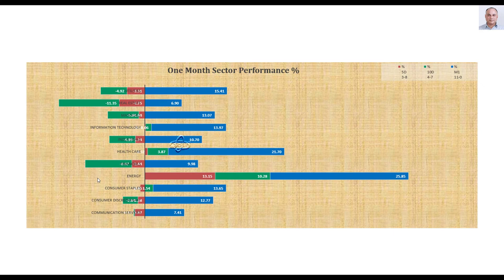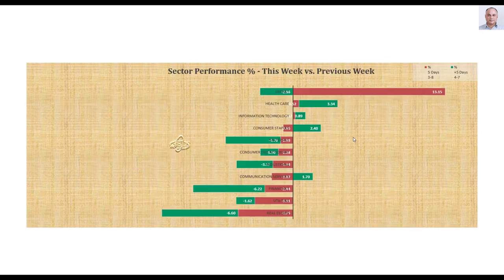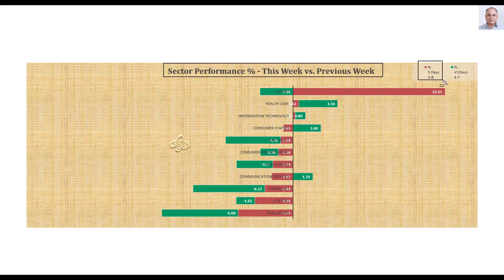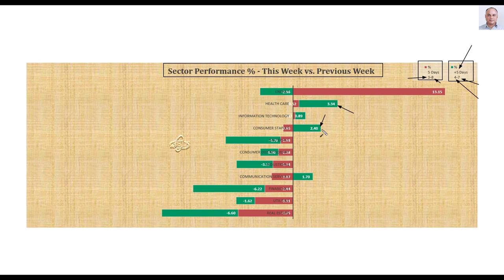Let me come back to sector performance. Now let's compare this week's performance with the previous week. The red bars represent last 5 days — this week's performance — and the green bars represent previous 5 days. Last week, 4 sectors were up and 7 were down. This week it deteriorated a bit: 3 are up and 8 are down. Last week the sectors that were up were healthcare, consumer staples, and communication services — all defensive areas — plus information technology, non-defensive but by a smaller percentage.